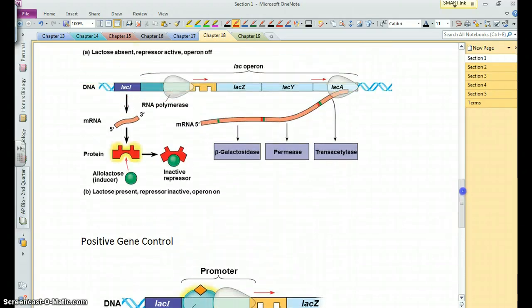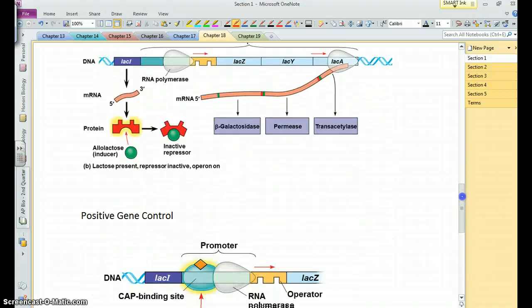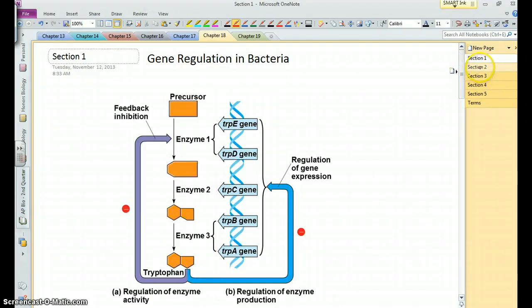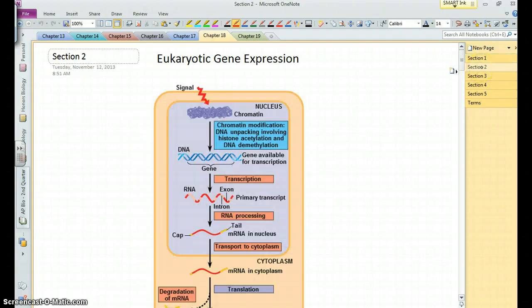So again, the lac operon has a second level of control. Okay, so that's bacteria and operons. Operons are just in bacteria. If you see or hear that word, think bacterial control of transcription. Now, let's look at eukaryotes.